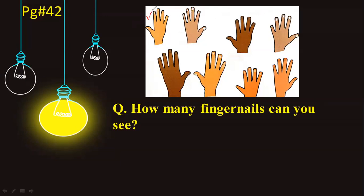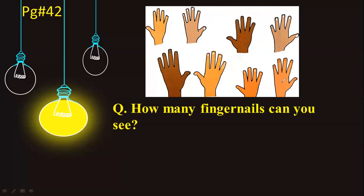The first hand has five fingernails. So: 5 plus 5 is 10, plus 5 is 15, plus 5 is 20, plus 5 is 25, plus 5 is 30, plus 5 is 35, plus 5 is 40. So how many fingernails can you see? You can see 40 fingernails. I hope this is clear to all of you.